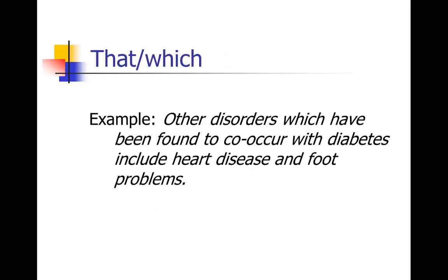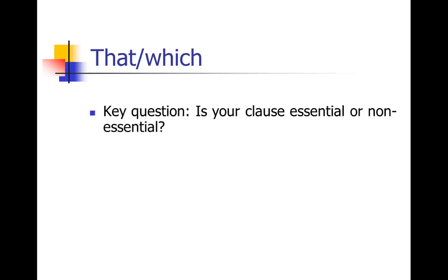I'll give you some more examples of that versus which. For example, this was a sentence I had to edit. It said other disorders which have been found to co-occur with diabetes include heart disease and foot problems. Well, the have been found to occur with diabetes is actually essential material. So there shouldn't be a which there, it should be a that. Because other disorders, you couldn't set that off with parentheses. It's essential information. Other disorders that have been found to co-occur. You need that clause in there, so therefore it's a that case. If it was non-essential information set off with commas, then you could use a which.